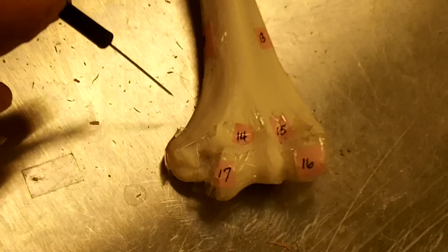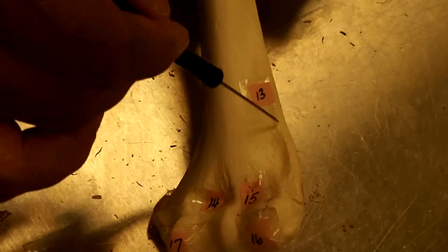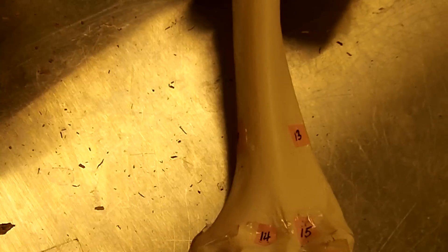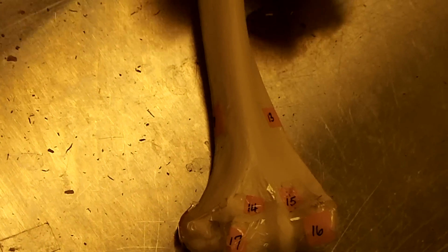Above the condyles, we have the supercondylar ridges - medial and lateral. That's what those are. All right, thank you.